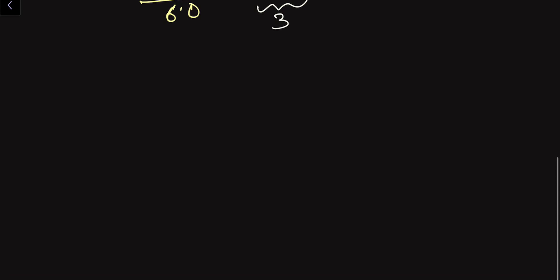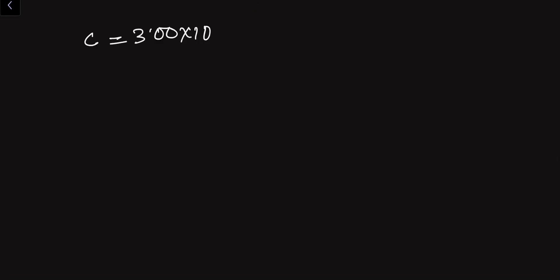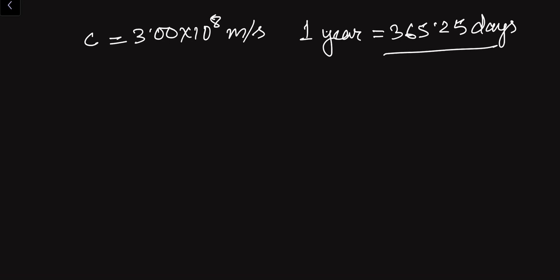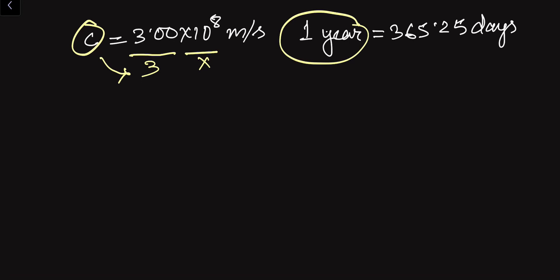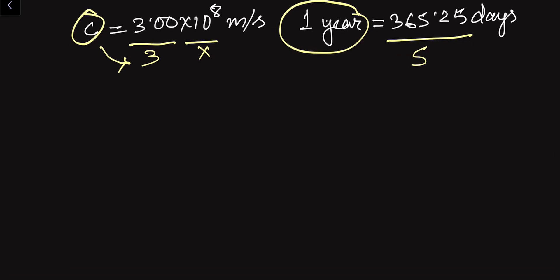Suppose you are given that the speed of light c = 3.00 × 10^8 meter per second, and you are asked to find the distance travelled in one year — that is, one light year. You are given that one year has 365.25 days. In c = 3.00 × 10^8, there are three significant digits, because trailing zeros after a decimal are significant. The value 365.25 has five significant digits because they are all non-zero. So we must express the result in only three significant digits.